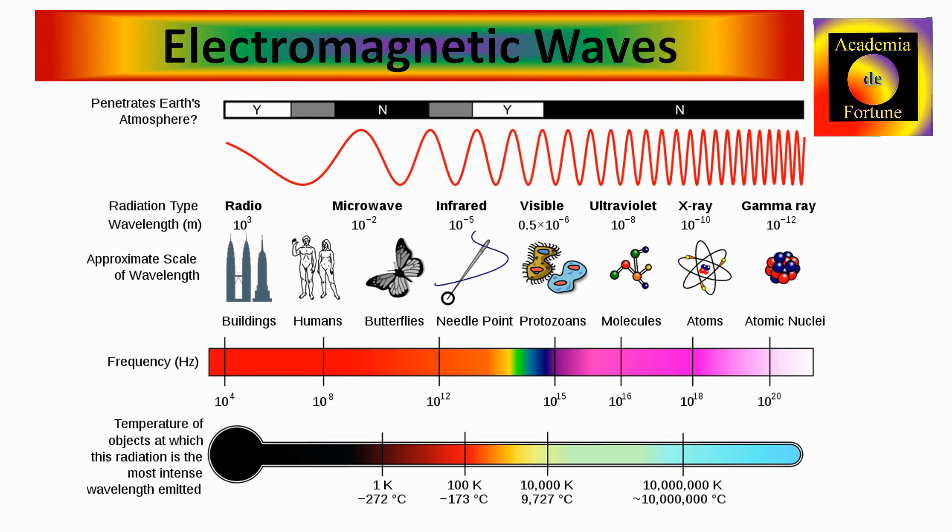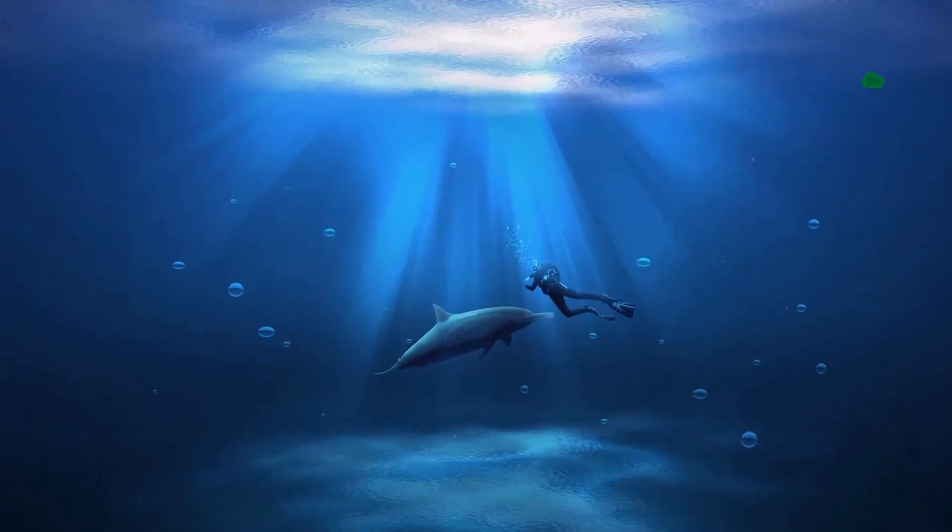Electromagnetic spectrum has a range of different waves depending upon their energy and wavelength. That includes radio waves, microwaves, infrared, visible light, x-rays to gamma rays. We will be discussing electromagnetic waves in more detail later on in our video.